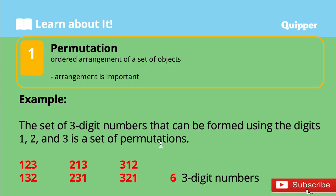Let's learn first the definition of a permutation. A permutation is a mathematical technique that determines the number of possible arrangements in a set when the order of arrangements matter. In other words, arrangement is important. For example, the set of three-digit numbers that can be formed using the digits 1, 2, and 3 is a set of permutations.